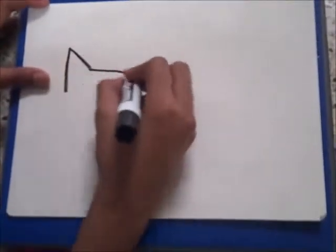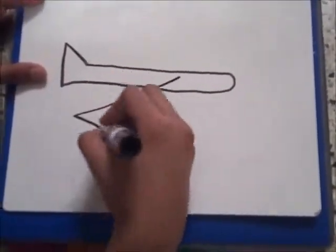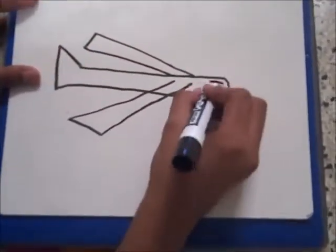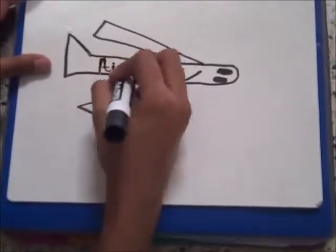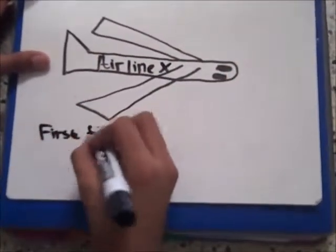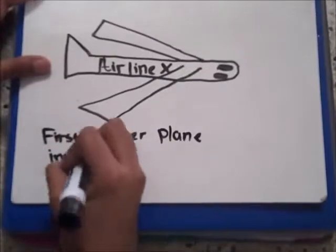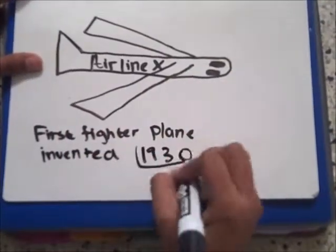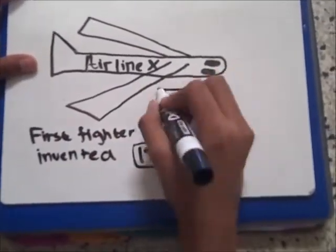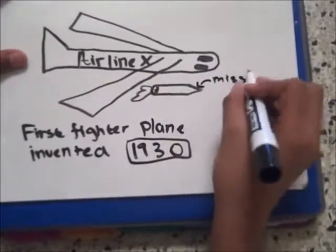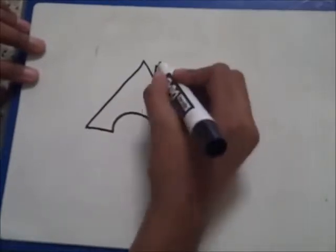The first fighter plane was built in 1930. Guns were attached to the lower side of this plane.